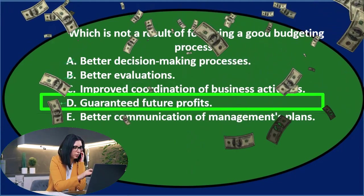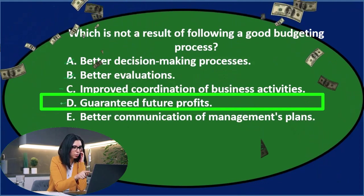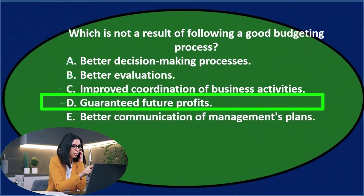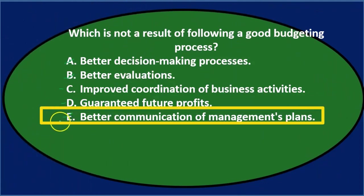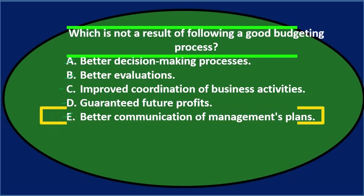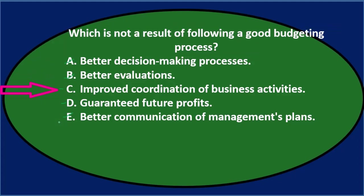E says better communication of management's plans — I'd think the budget would do that. So we're left with C and D. Which is not a result of a good budgeting process? Either C, improved coordination of business activities, or D, guaranteed future profits.